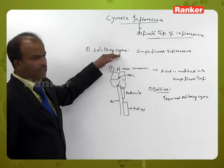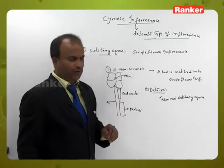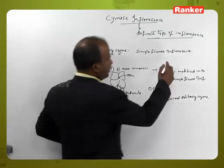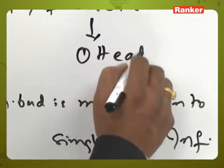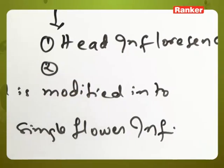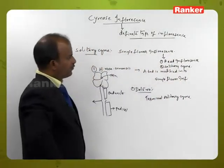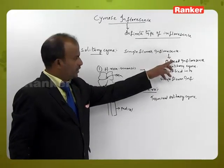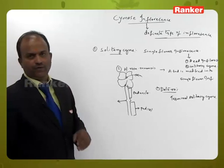Solitary cyme itself indicates a single flower inflorescence. Two types of inflorescence look like single flower inflorescence: head inflorescence and solitary cyme inflorescence.